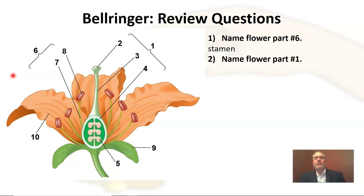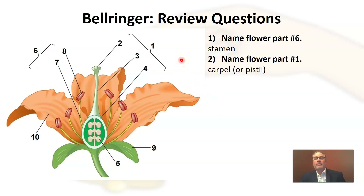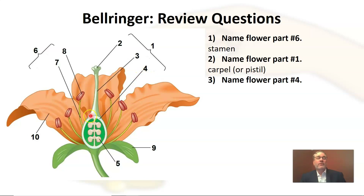Question two: name flower part number one. You can tell by this bracket that it includes parts two, three, four, and five. Part number one — that is of course the carpel, sometimes called the pistil.